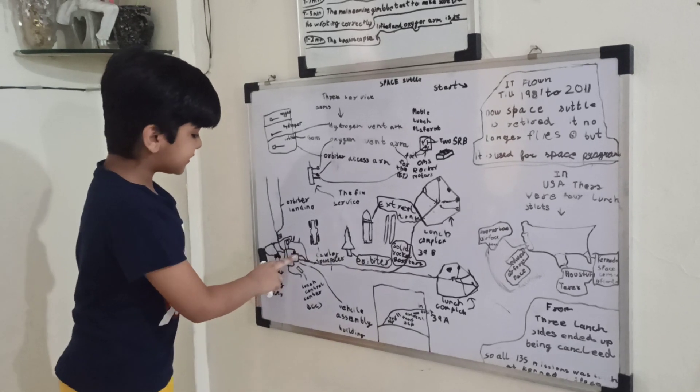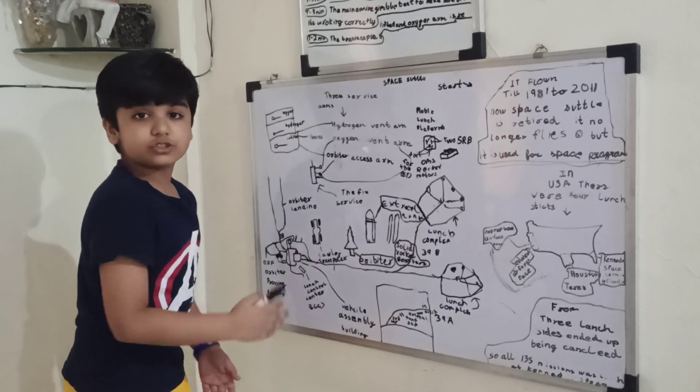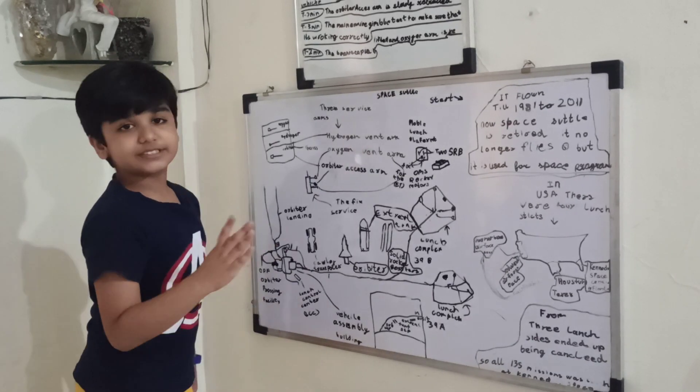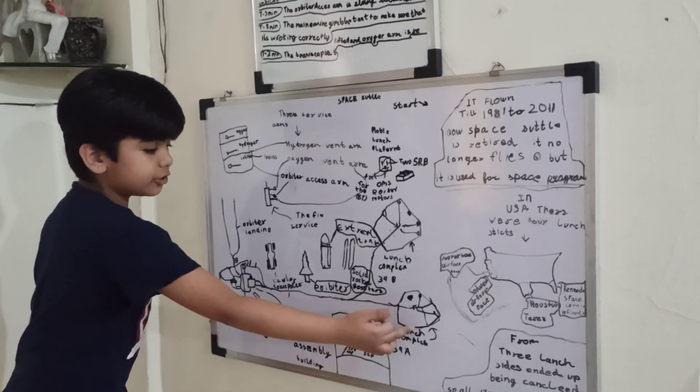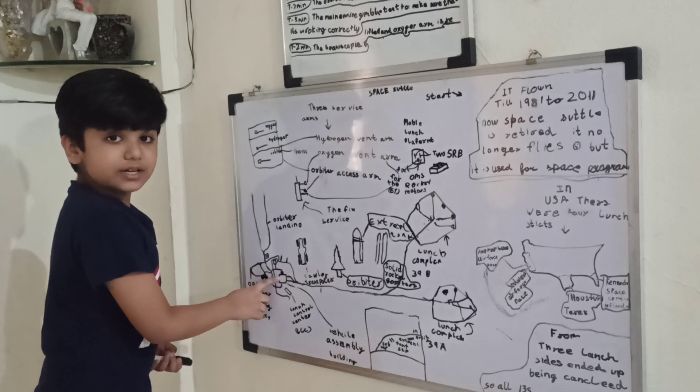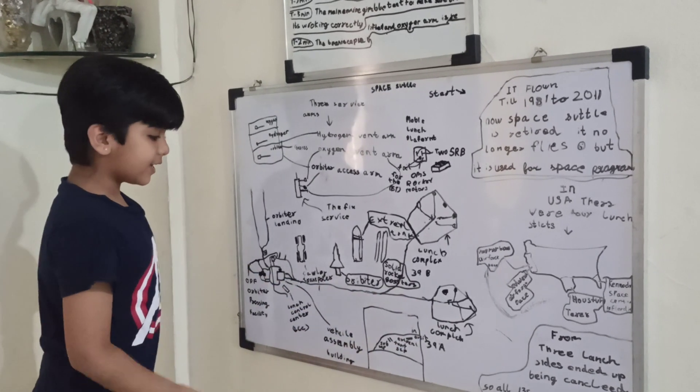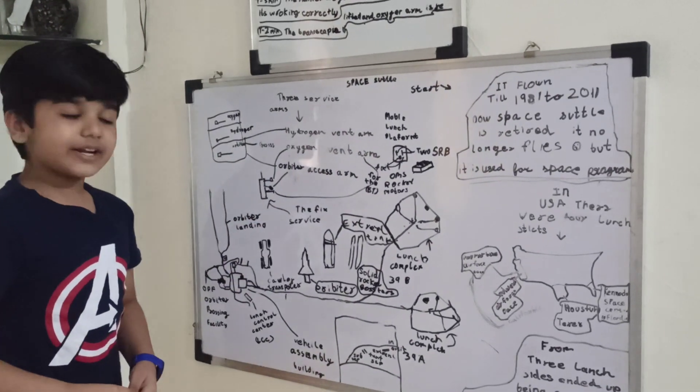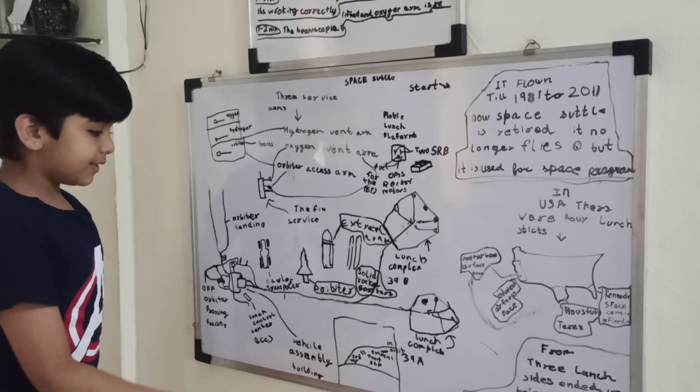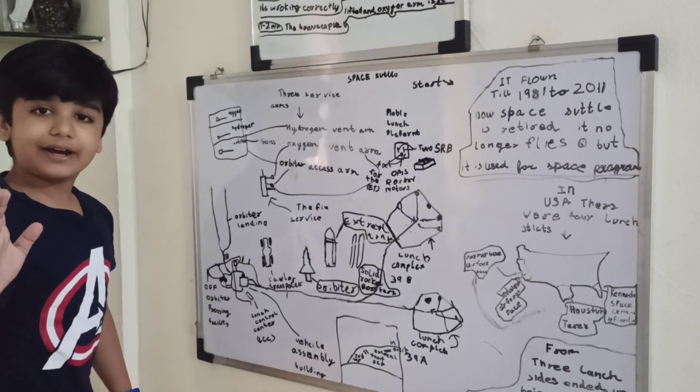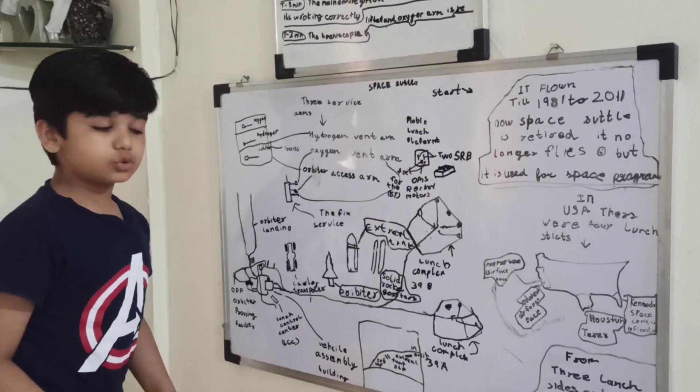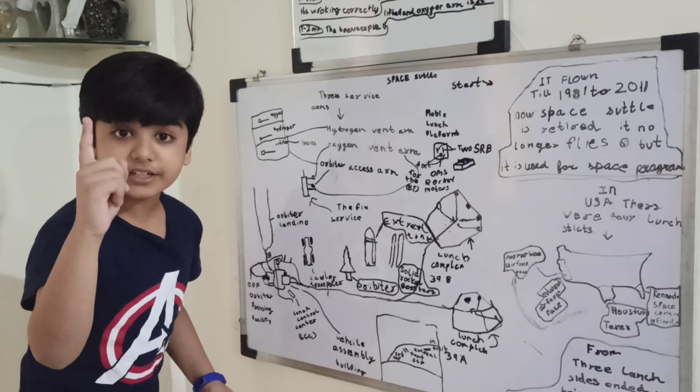Now it's a complete space shuttle, and now it is taken out from the VAB, which is called a rollout. One of those launch pads is more than five kilometers away. Now let us see how it is transferred from the VAB to one of the launch pads. There is the crawler transporter which carries it from the VAB to the launch pad. There is a mobile launch platform where it is connected with the solid rocket boosters and the orbiter.